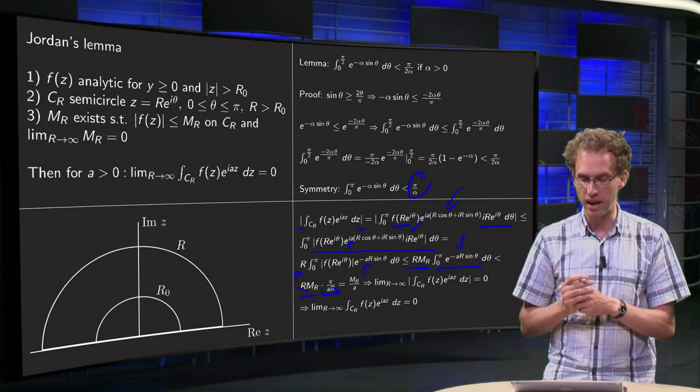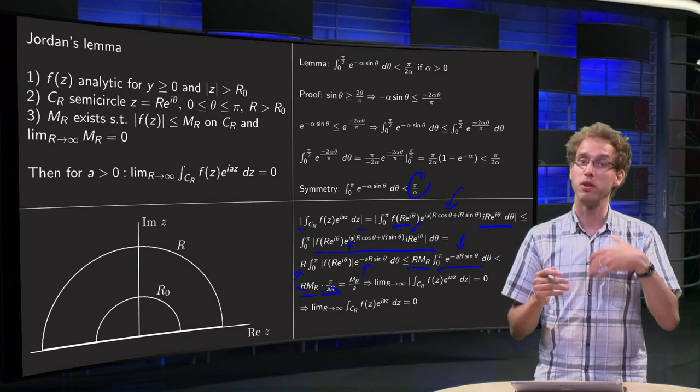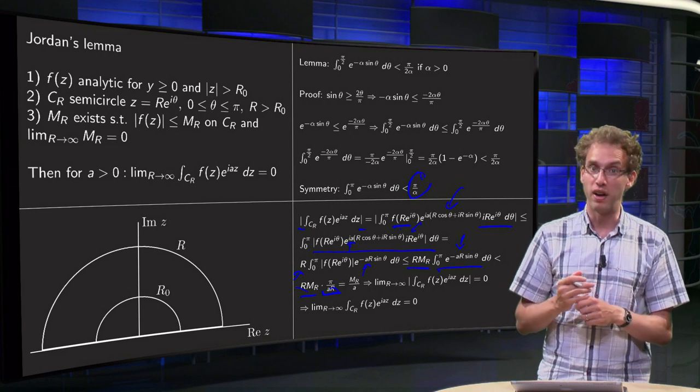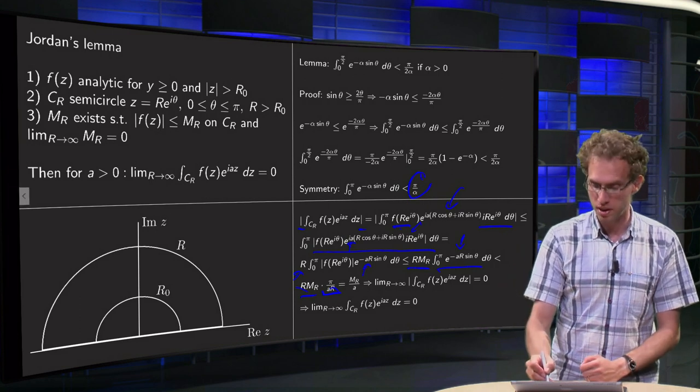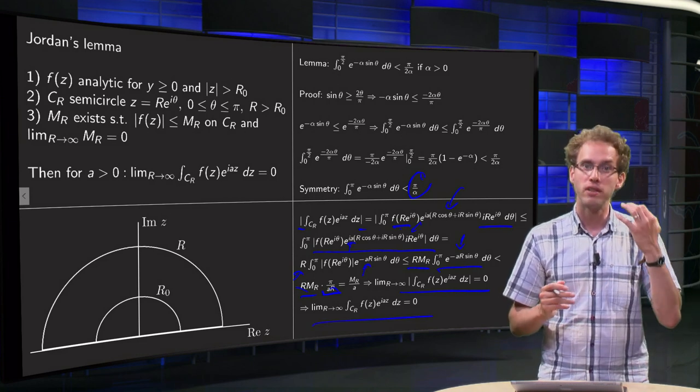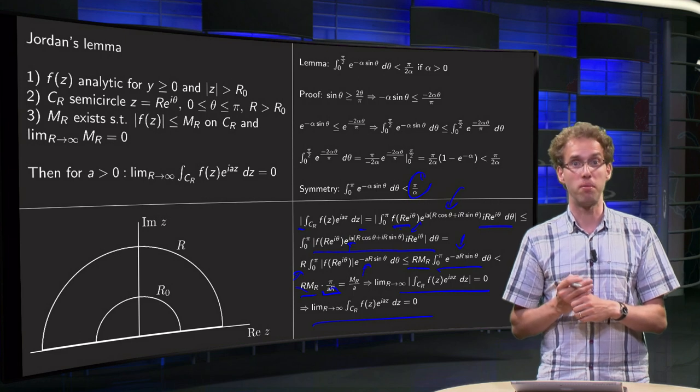And now we see that this additional factor of R cancels out. So we get M_R times a factor of π over a. That doesn't matter because if you take R to infinity, your M_R vanishes, which means that in the limit the norm of the integral vanishes. And that's why the integral vanishes. So that's how Jordan's lemma works.